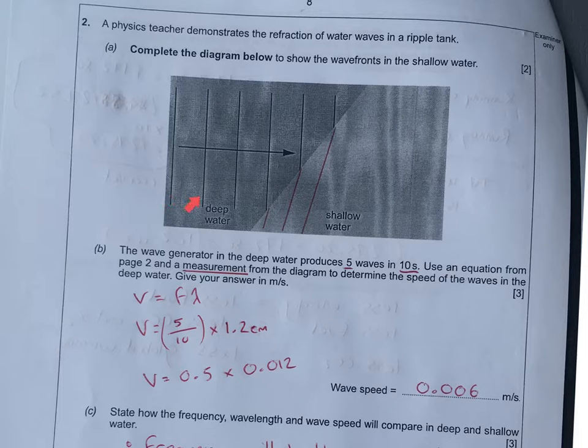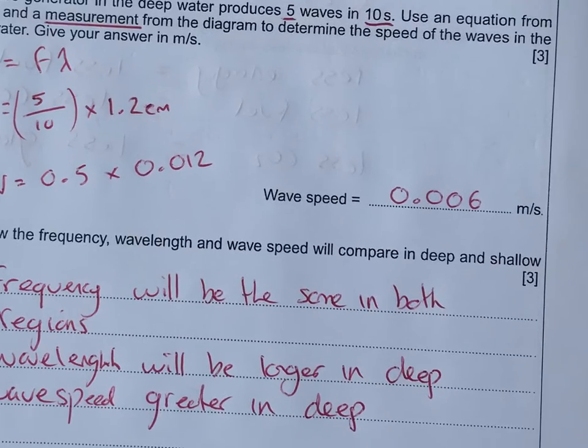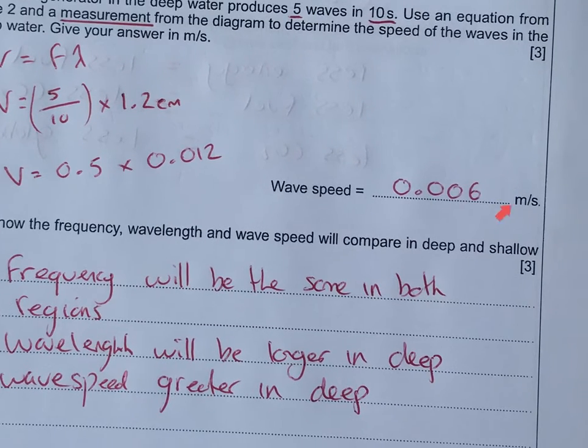If we've got five waves in 10 seconds, then we're going to have 0.5 in one second. You're going to have to measure this with your ruler. It comes out to be 1.2 centimeters or 12 millimeters. Don't forget that conversion back into meters because that's what the answer is in, meters per second. Always look for what the answer is in.